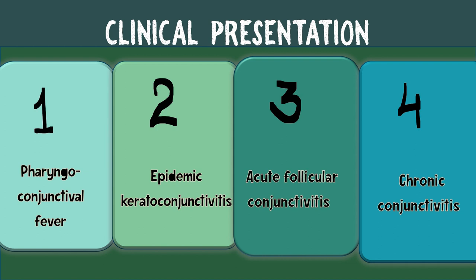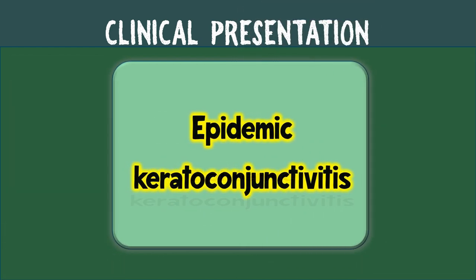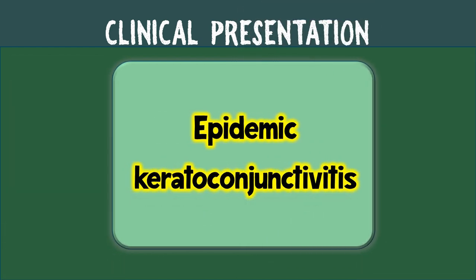Coming to the clinical presentations of adenoviral conjunctivitis, we have four: pharyngoconjunctival fever, epidemic keratoconjunctivitis, acute follicular conjunctivitis, and chronic conjunctivitis. We shall first discuss the epidemic keratoconjunctivitis (EKC), which is considered to be the prototype presentation of adenoviral keratoconjunctivitis.